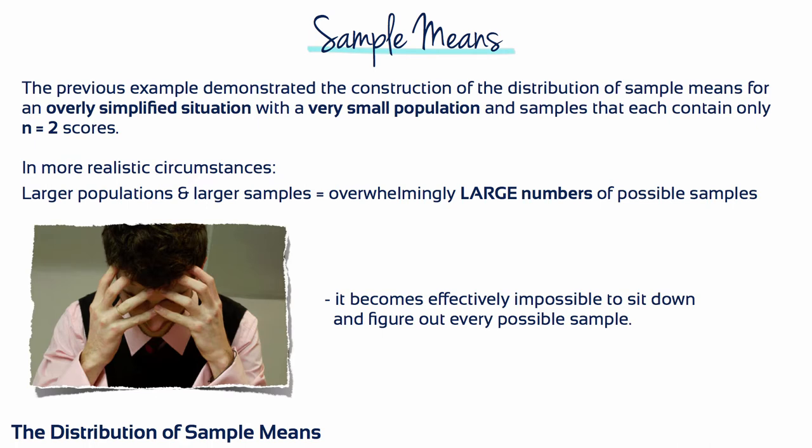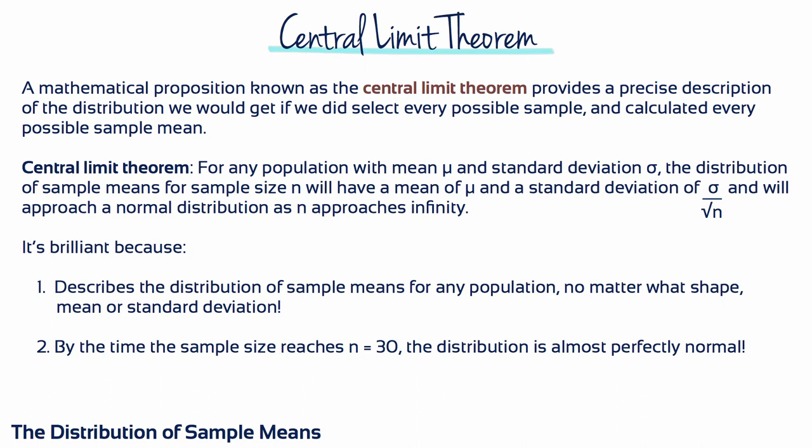The construction of this distribution of sample means is for an overly simplified situation with a very small population and samples that each contain only n of two scores. In more realistic circumstances, with larger populations and larger samples, the number of possible samples will increase dramatically and it will be virtually impossible to obtain every possible random sample. Fortunately, it's possible to determine exactly what the distribution of sample means will look like without taking hundreds or thousands of samples.